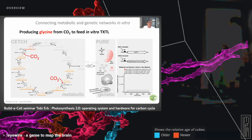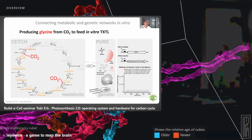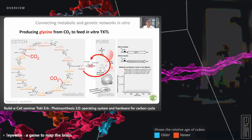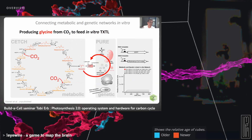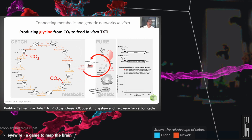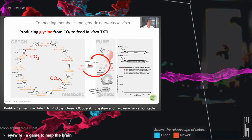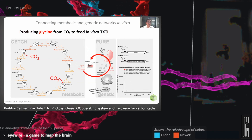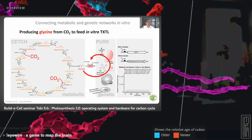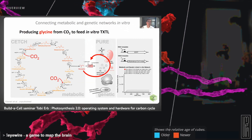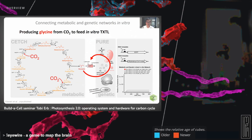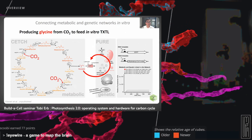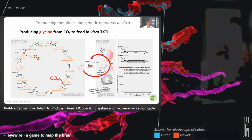You can think even crazier: make the CETCH cycle limiting by removing enzymes it needs, then let the cycle produce its own aminotransferase autocatalytically to improve its own activity — a positive feedback loop. I think this is really one of the first steps showing that metabolic networks can be coordinated with genetic networks, and it's a step forward in building systems where metabolic networks can start to make decisions at some point in time.